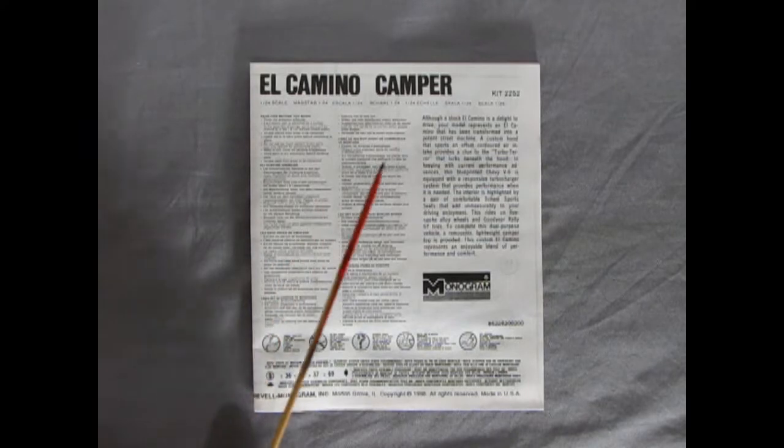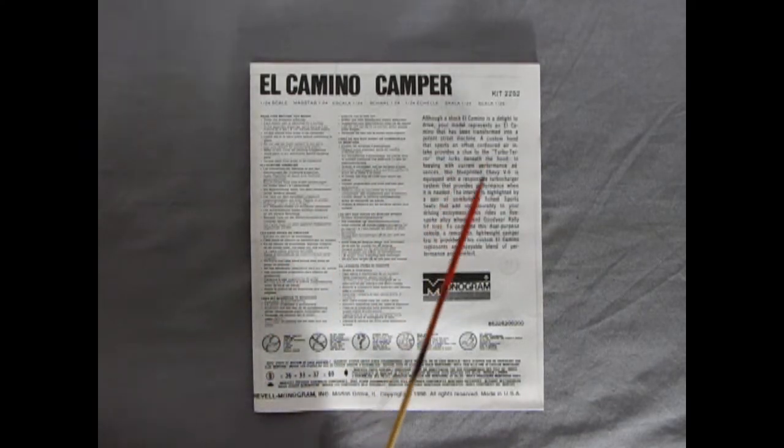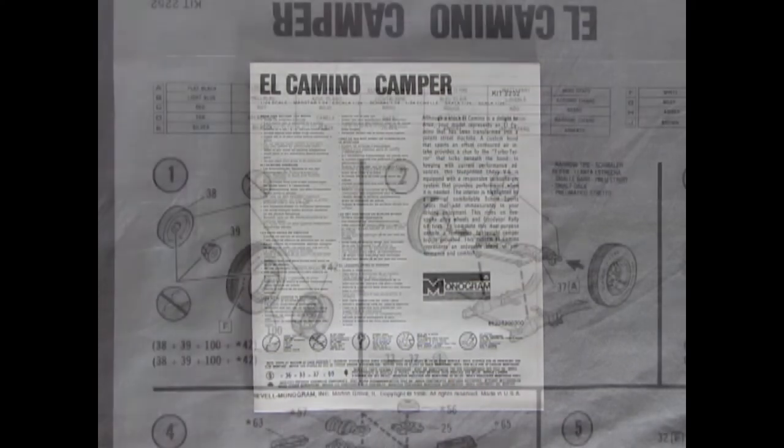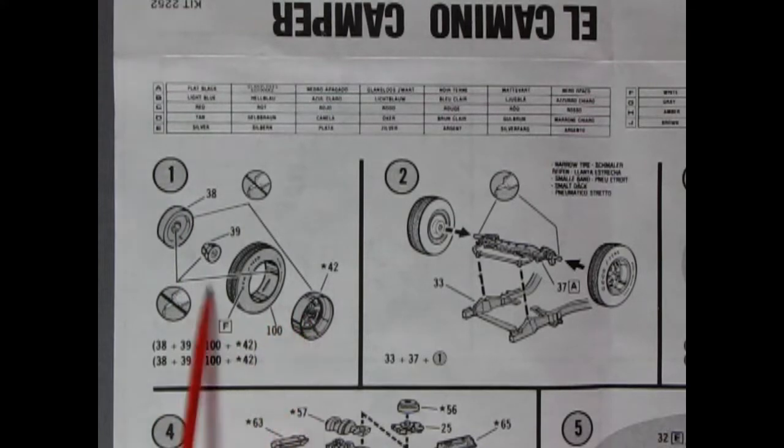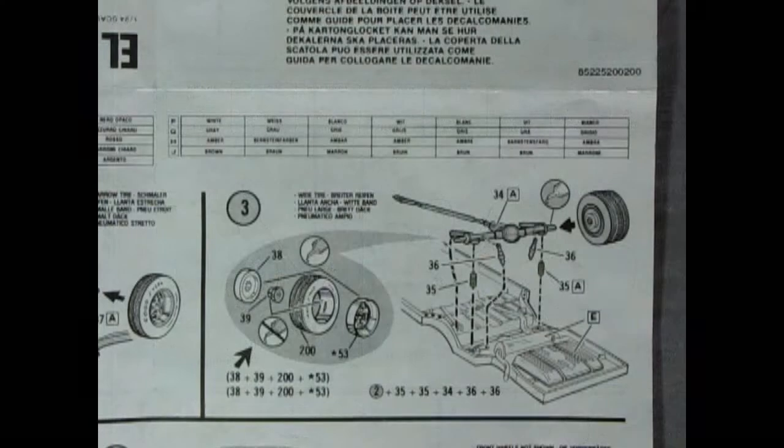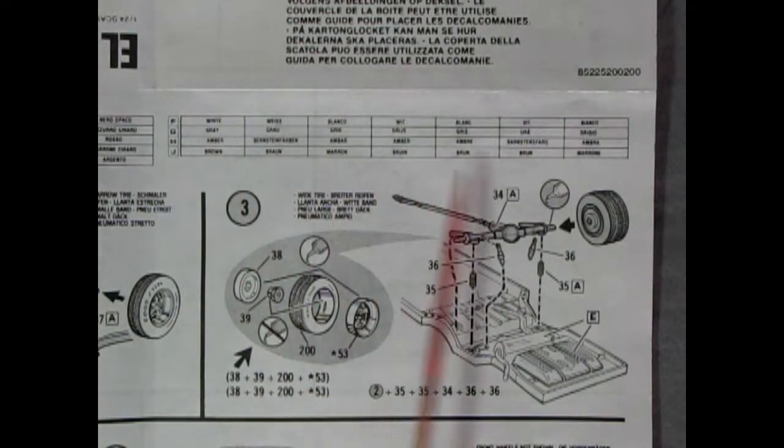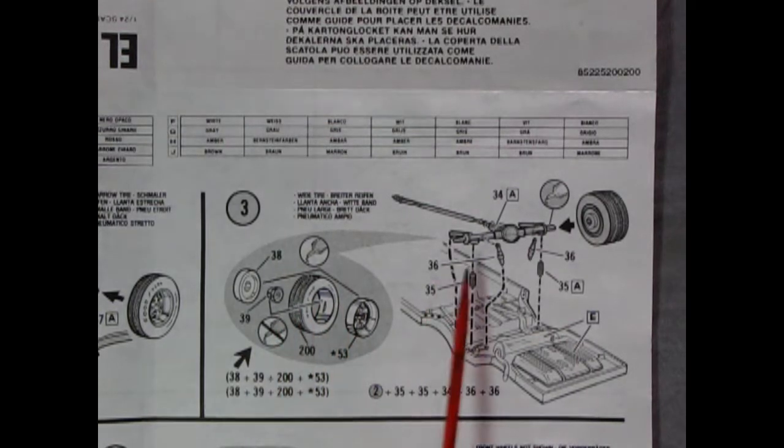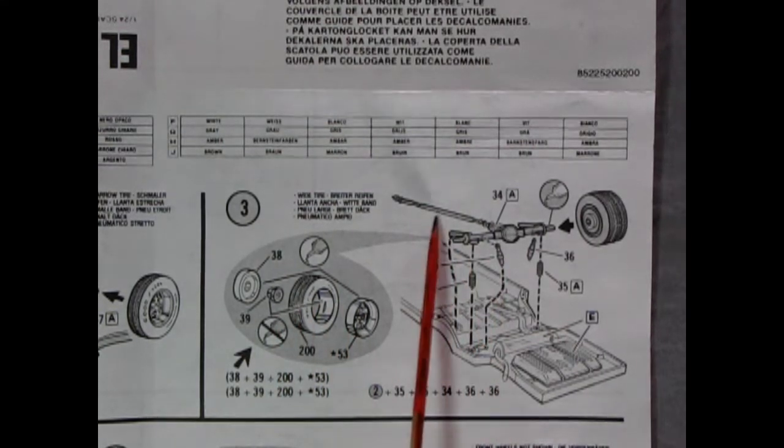Our instruction sheet for the El Camino Camper has this really nice write-up about the vehicle as well as all the symbols and other instructions we will need in order to assemble our model. We get some paint call-outs as well as our wonderful assembly of our four-piece wheels, and then they all hook onto the front axle which drops down on the frame. Our paint call-outs continue across the top of the sheet where we also get an illustration of our rear wheels being assembled and then our axle, drive shaft, and springs and shocks all dropping onto the back side of the frame.